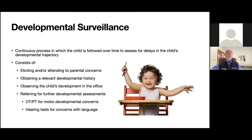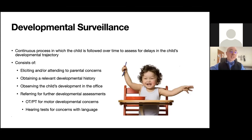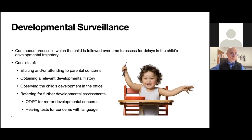Surveillance is the process of continuously observing and following children over time to assess for delays in their developmental course. This consists of listening to their parents, hearing their concerns, and reviewing their developmental history to get a thorough understanding of where they've been tracking over time.